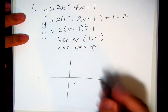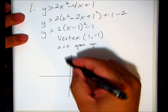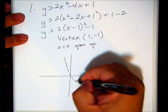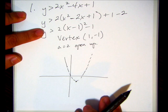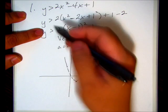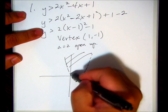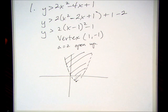So (1, -1) is down here. Should be dotted. It wants to be greater than, so it's above the parabola, so it's this region. That's it.